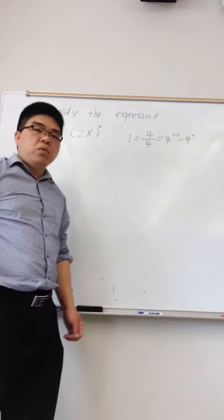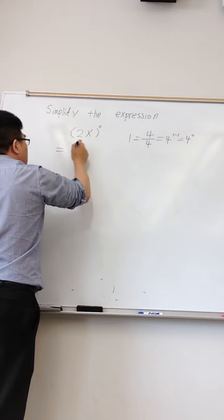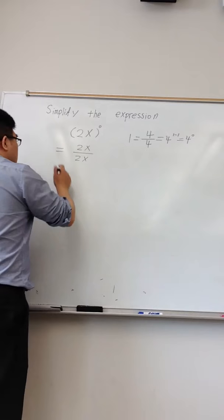So you have 2x raised to the power of 0. It means that's 2x over 2x, which equals 1.